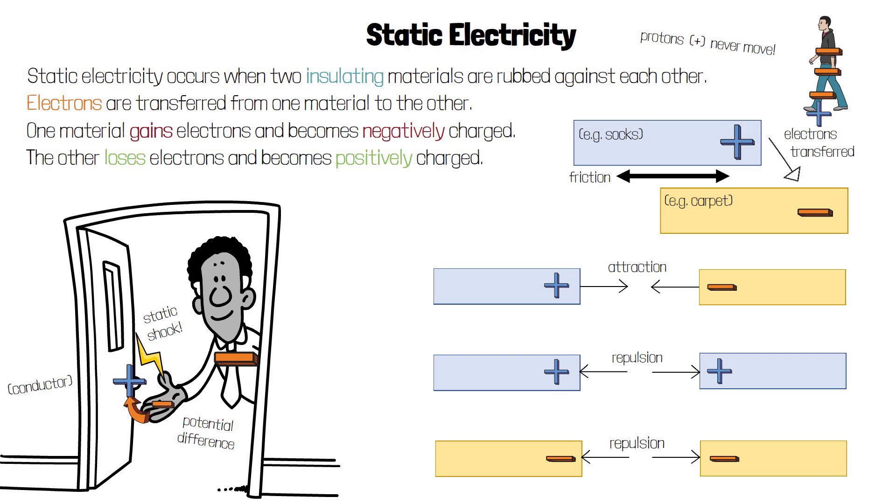This can also happen if you become positively charged, because electrons will jump from the door handle, which is relatively more negative than you, to your hand. Electrons always move from a negatively charged object to a positively charged object.